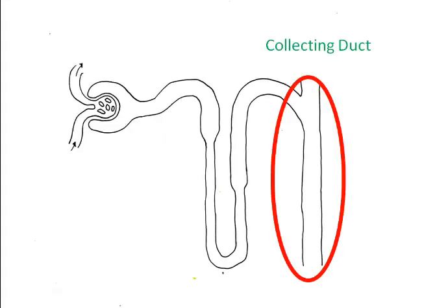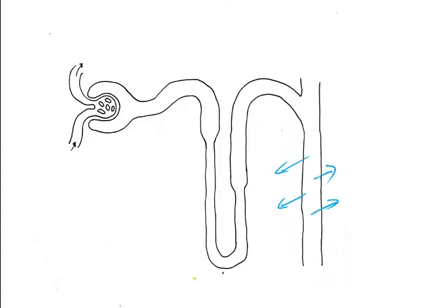Homeostatic mechanisms regulate body fluid volume. In our last video, we saw that the collecting duct is variably permeable to water. If the body is poorly hydrated, the duct is more permeable to water and more water will be reabsorbed back into the blood. If the body is over-hydrated, the collecting duct is less permeable to water and consequently more water continues in the tubules and is excreted. There are two mechanisms that control how much water leaves the collecting ducts and returns to the blood vessels, and how much remains and leaves the body.